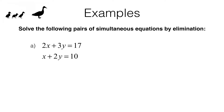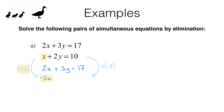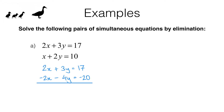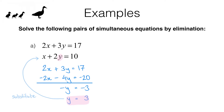I'm going to keep the first equation unchanged and multiply the second equation through by negative 2. That gives me negative 2x minus 4y equals negative 20. Adding the equations together, the x's eliminate, giving me negative y equals negative 3, so y equals 3. Substituting y equals 3 into the second equation: x plus 6 equals 10, so x equals 4. Our solution is x equals 4, y equals 3.